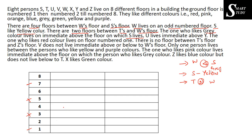So only two possibilities remain: W can be either on floor number one or floor number seven. If W is on floor one, counting four gaps, S would be on floor five, and gray would be on floor six. If W is on floor seven, counting four gaps, S would be on floor three, and gray on floor four. Also, between T and W there is a gap of two persons, so T is placed accordingly in each case.